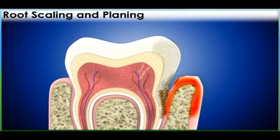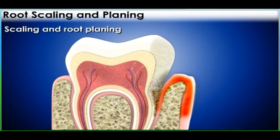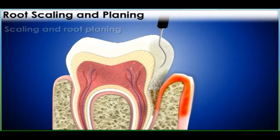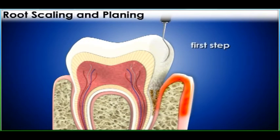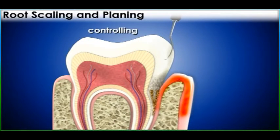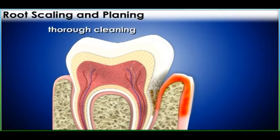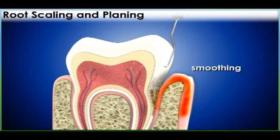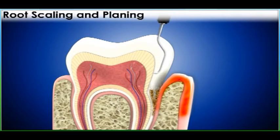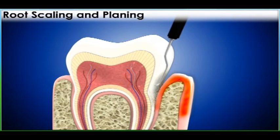Therefore, scaling and root planing can be recommended as the first step in actively controlling the periodontal disease. It consists of a thorough cleaning and smoothening of surfaces of tooth and root to remove plaque below the gum line.